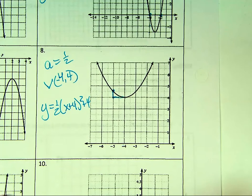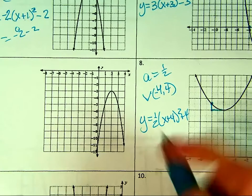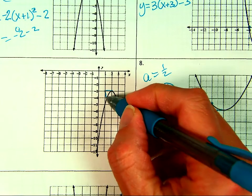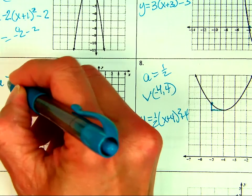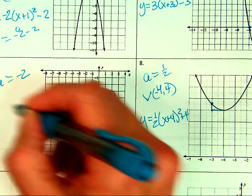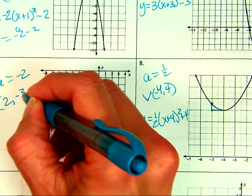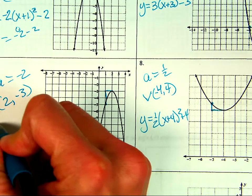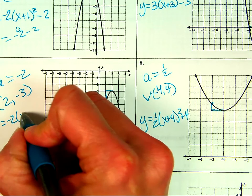Next one: over 1, down 2 — so A is negative 2. Vertex is (2, −3). Equation: f(x) = −2(x − 2)² − 3.